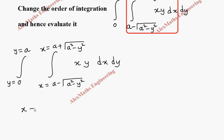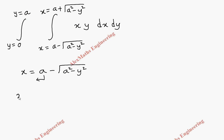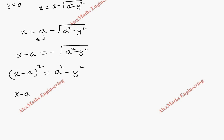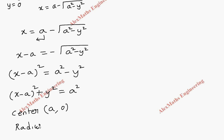Let's take the lower limit of x: x equals a minus root of (a squared minus y squared). Taking a to the other side gives x minus a equals minus root of (a squared minus y squared). Squaring both sides gives (x minus a) squared equals a squared minus y squared. Rearranging, (x minus a) squared plus y squared equals a squared. This is the equation of a circle with center (a, 0) and radius a.